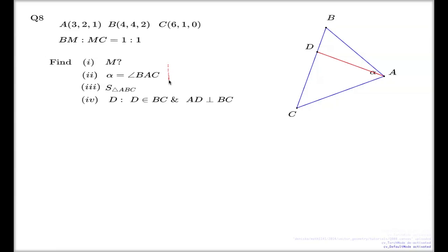This is a tutorial question number 8 from chapter 2. We're given a triangle ABC, and we know the coordinates of each individual vertex of that triangle.